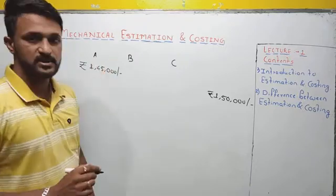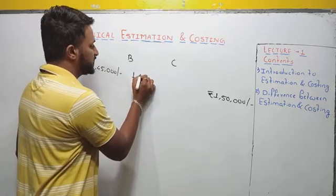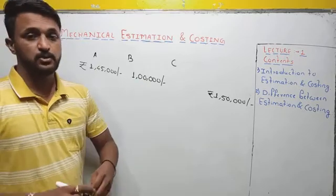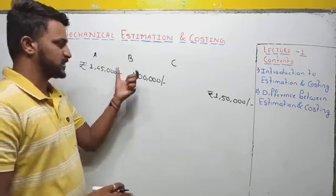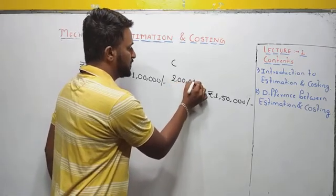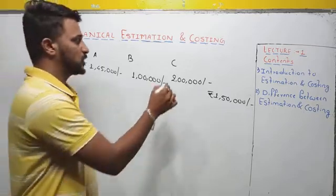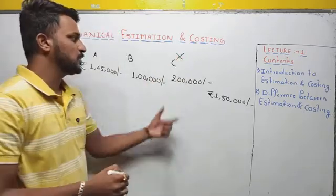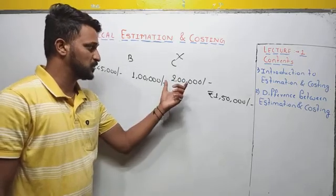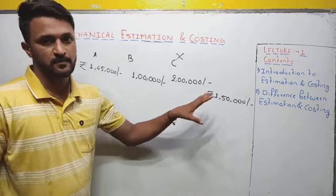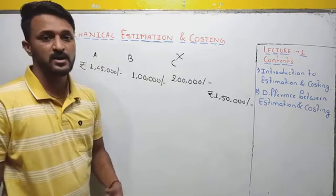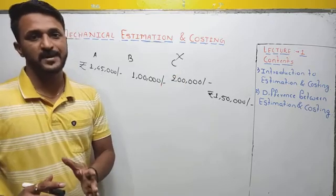When you visit Painter B, he says he will do the work at one lakh rupees. As a customer, you will be very happy to go with Painter B. When you visit Painter C, he says he can do it at two lakh rupees. Definitely you are not going to give any work to Painter C, because he is quoting fifty thousand more than the market value. This is called overestimation, and this person is not going to get the work.